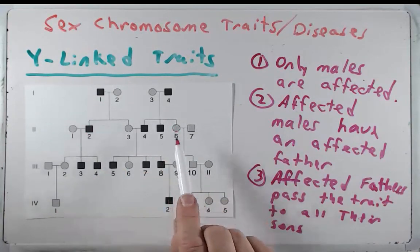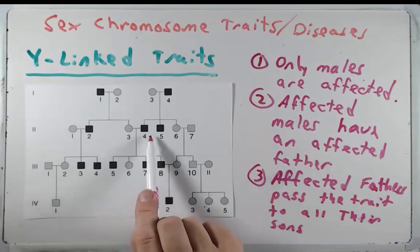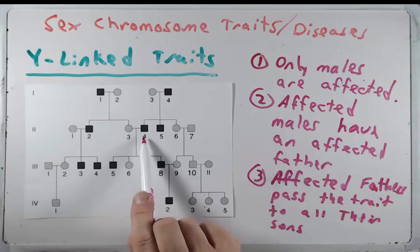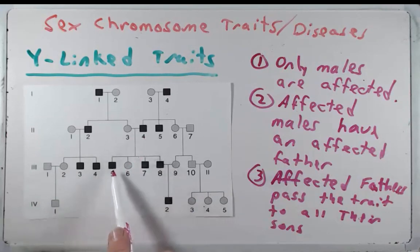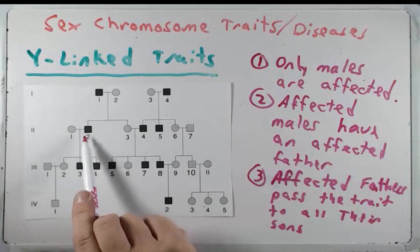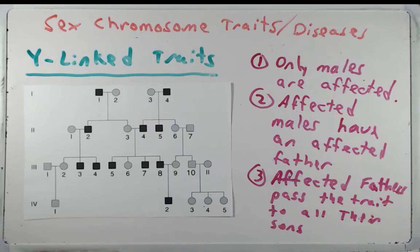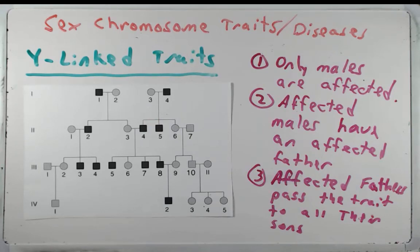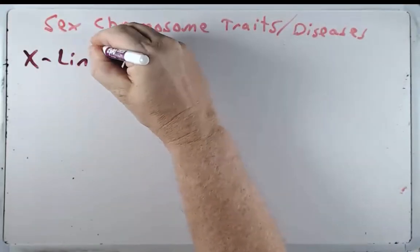A good example of this: generation two individual four had three sons and they were all affected. Individual two of the same generation had two sons and they were both affected — they could not have a son that was not carrying that mutation. Next let's talk about X-linked traits, which like autosomes can have mutations that are either recessive or dominant.